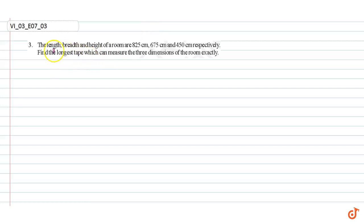In this question it is given that the length, breadth, and height of a room are 825 cm, 675 centimeters, and 450 centimeters respectively. Find the longest tape which can measure the three dimensions of the room exactly.